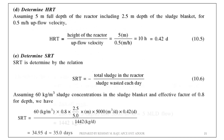For hydraulic retention time, assume total depth = 5 m, including 2.5 m of sludge blanket. With upflow velocity = 0.5 m/h, HRT = height ÷ upflow velocity = 0.42 days. For SRT, total sludge in reactor is assumed at 60 kg/m³. SRT = total sludge in reactor ÷ sludge wasted per day = approximately 35 days.